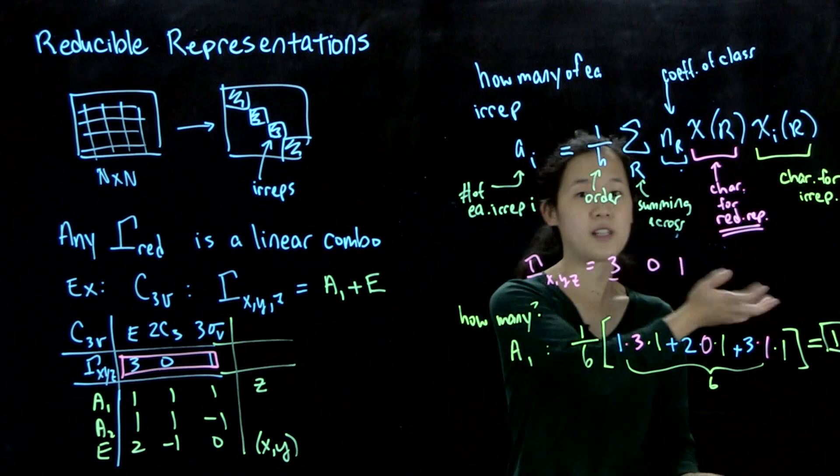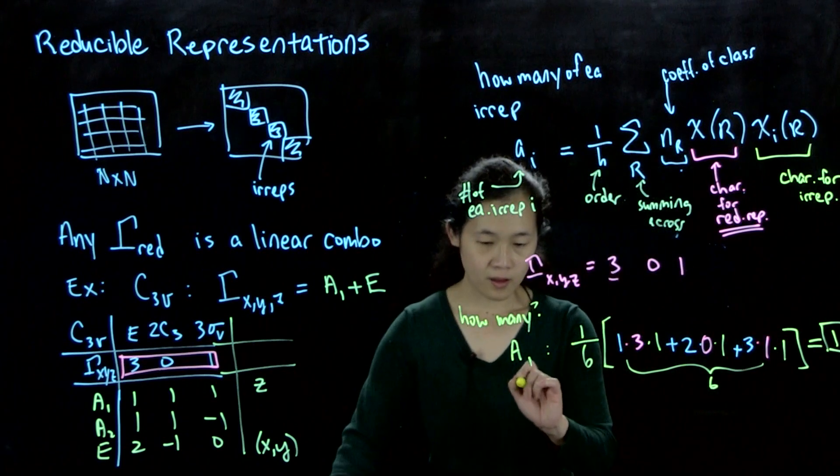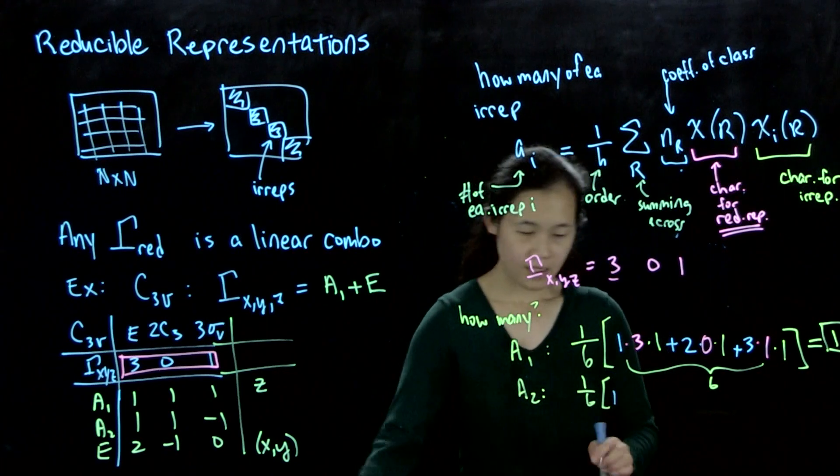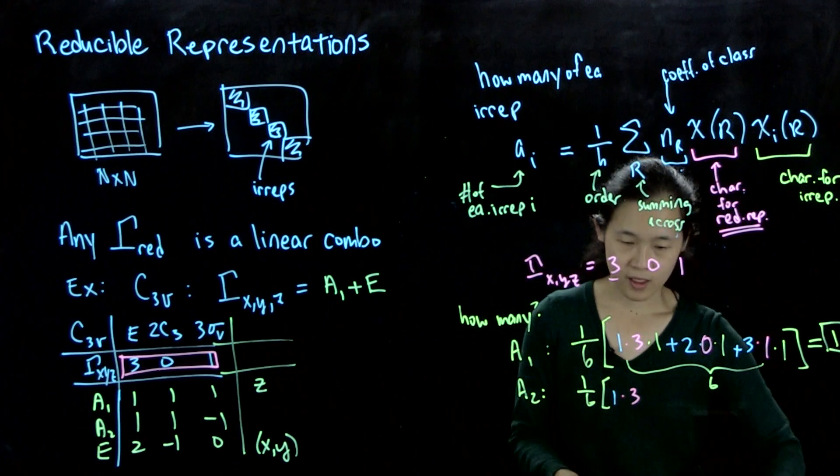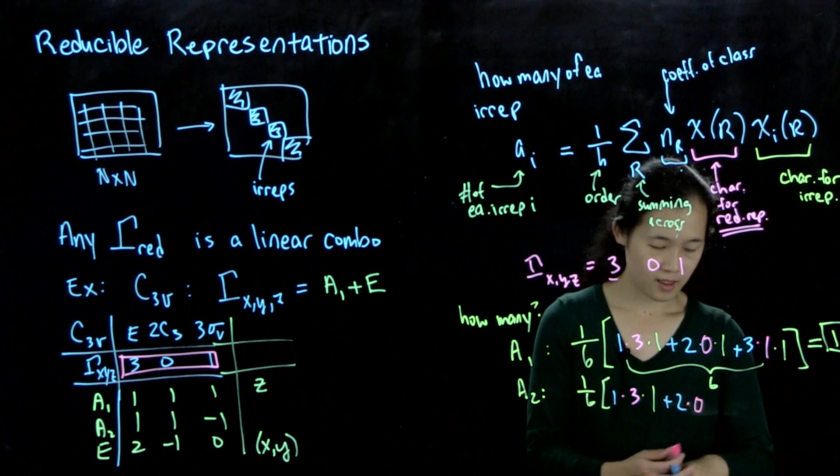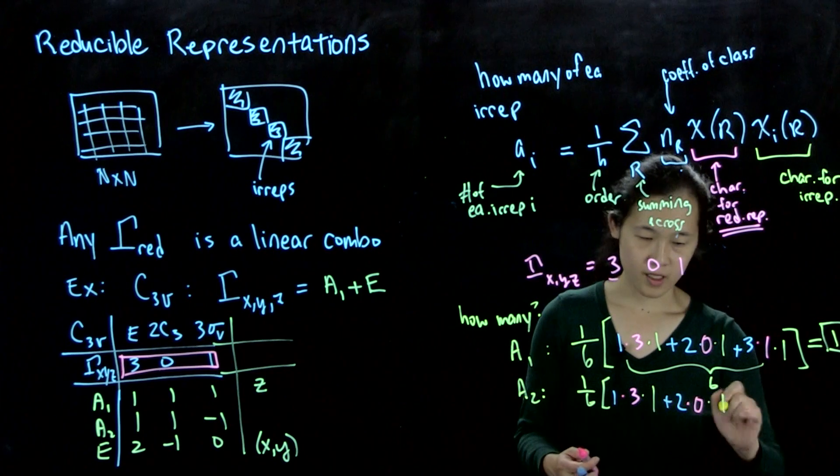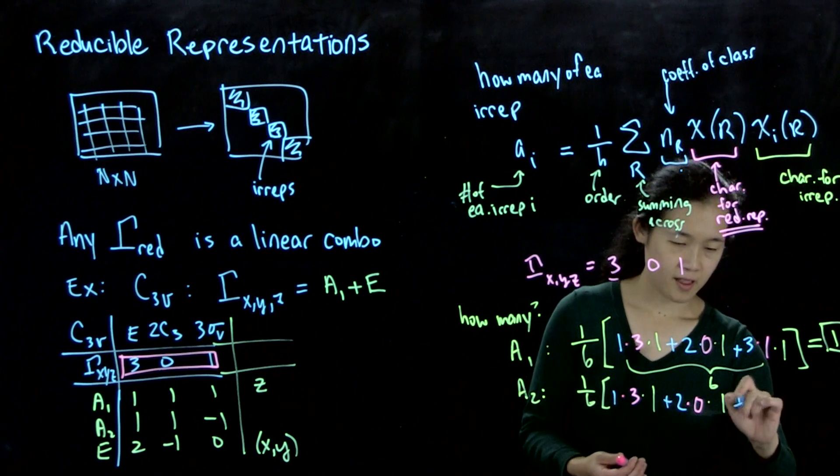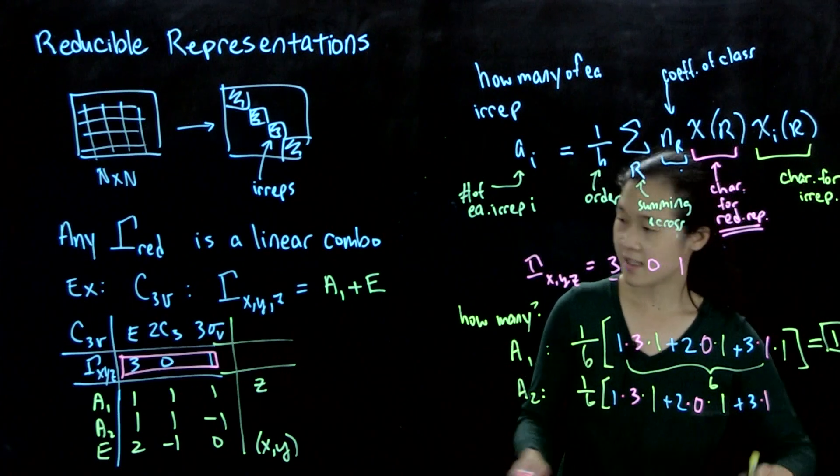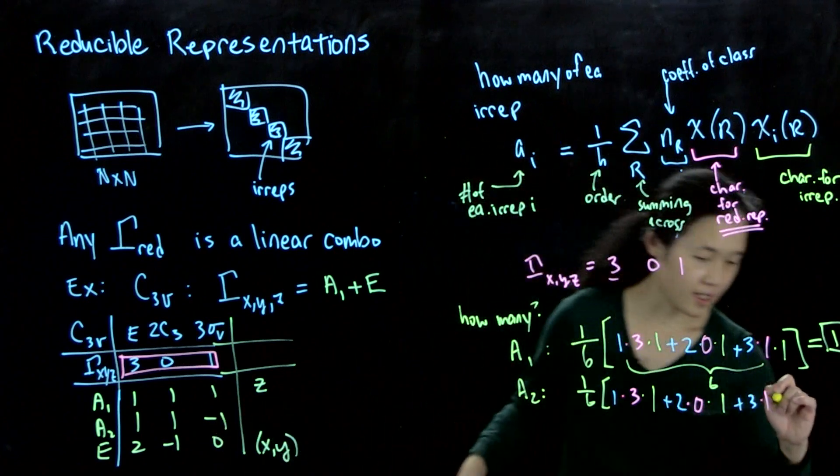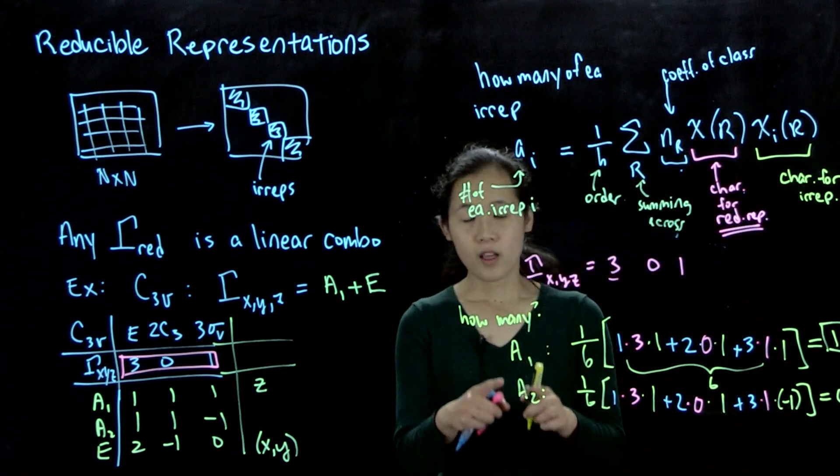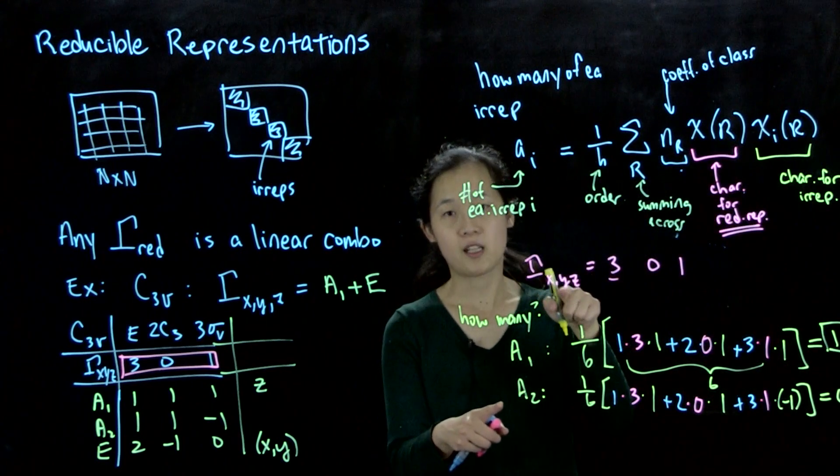So we're saying gamma xyz equals a1 plus something else. We can do the same thing for a2, which is 1 over 6, 1 times 3 times 1 plus 2 times 0 times 1 plus 3 times 1. And in this case, the character under sigma v for the a2 is times negative 1. So overall, this is 0. What this means is that a2 is not a component in the reducible representation of gamma xyz.